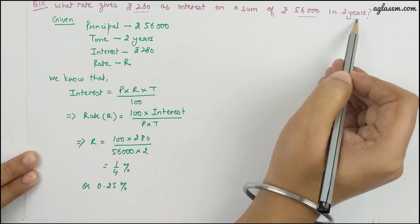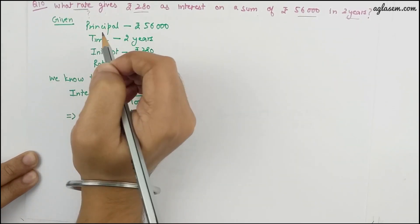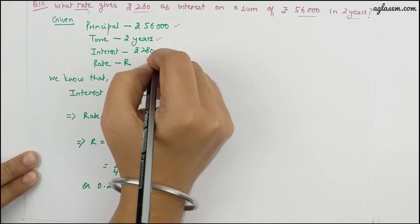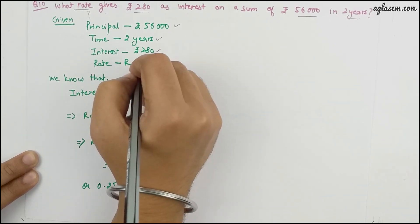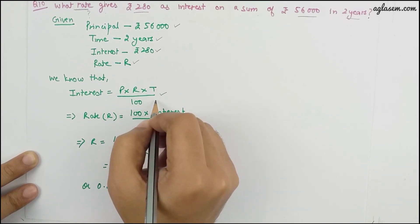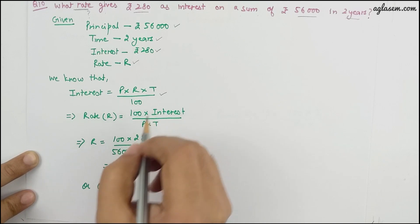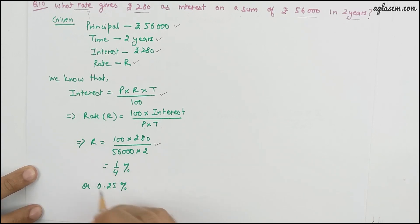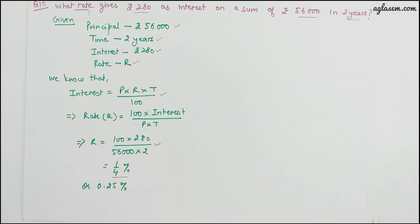Question 10: what rate gives 280 rupees as interest on a sum of 56,000 in two years? We know the principal, time, and interest but not the rate. Using the formula: rate equals 100 into Interest divided by Principal into Time. Substituting the values, we get 1/4 percent, that is 0.25 percent as the rate of interest.